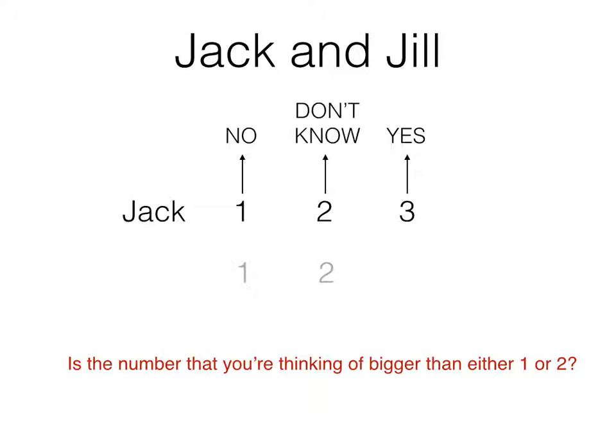Jill has now worked out the three responses that Jack will give depending on the number that he chose. If he answers yes, she knows his number must have been 3. If he answers no, she knows his number must have been 1. And if he answers 'don't know', his number must have been 2.